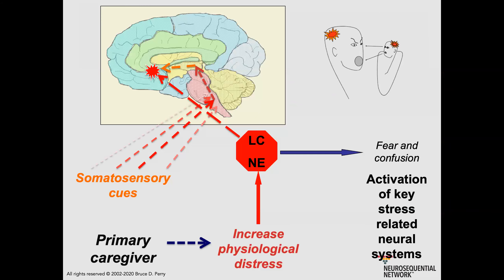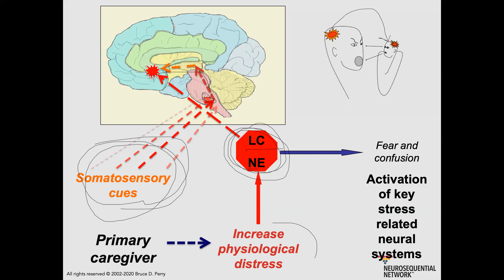Some people have a caregiver who's overwhelmed, or they have somebody in their early development who is hostile and threatening. Rather than having the reward systems activated, when somebody interacts with you in this unpredictable way and isn't meeting your needs — but is actually angry that you are expressing your needs — if you're hungry, thirsty, and cold and you cry, they come and they're angrier. They're unpredictable. They raise their voice, they're rough with you when they change your diaper. That activates your stress response system — your locus coeruleus noradrenergic network — and you start to make an association between all of the somatosensory cues of relational interaction and threat.